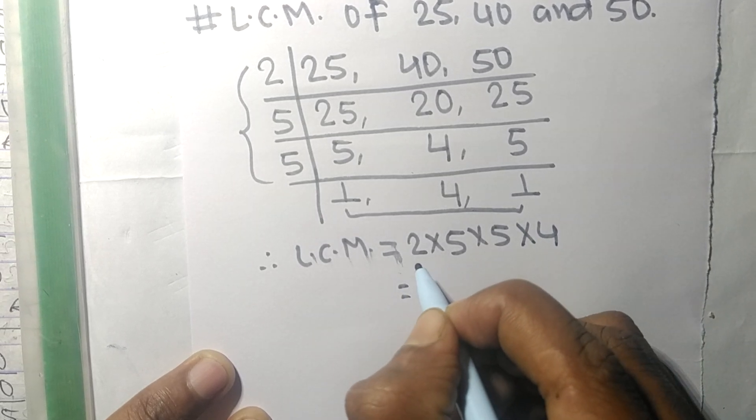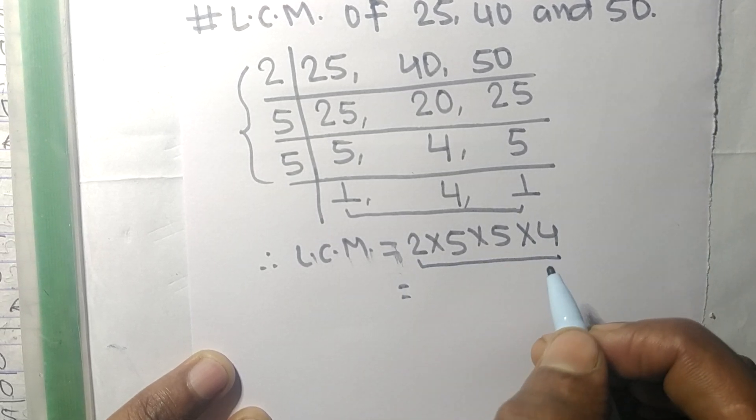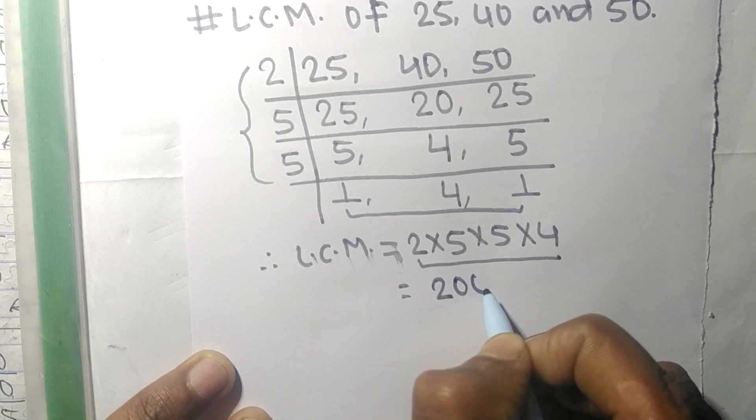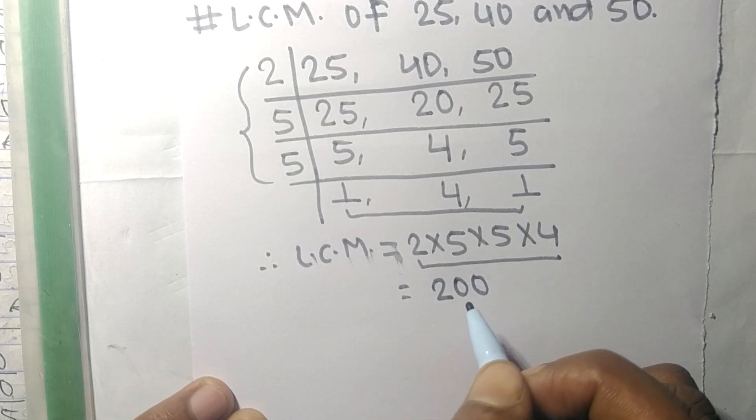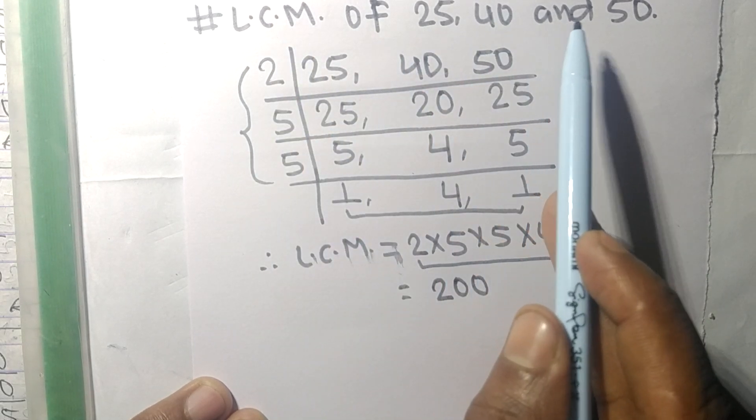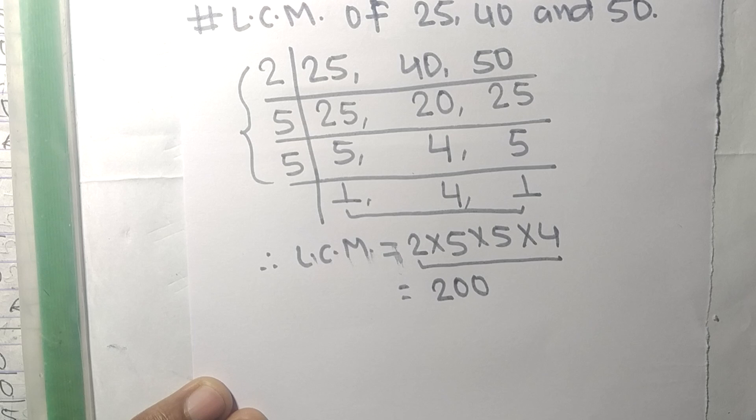So by multiplying all these numbers we get 200. So 200 is the LCM of 25, 40 and 50.